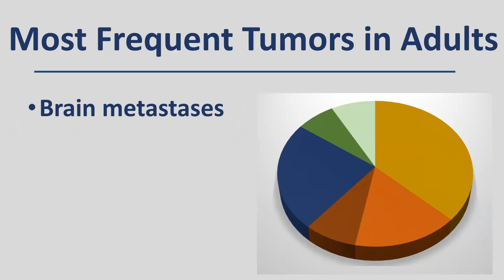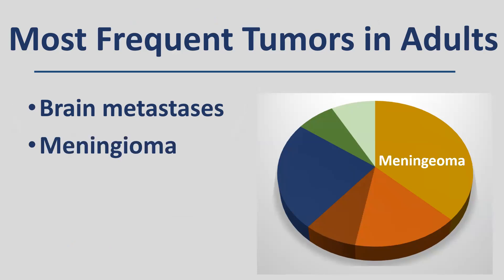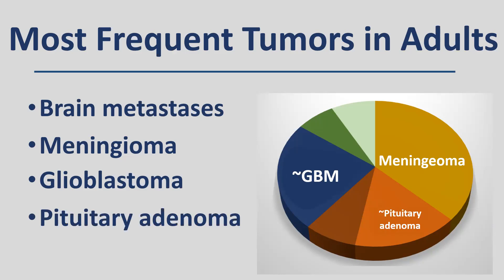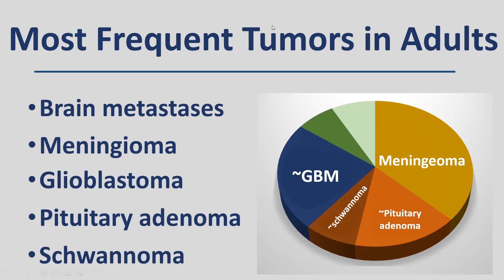In adults, the most frequent tumour is brain metastases. For primary brain tumours, the most frequent are: gliomas — with the majority being glioblastoma — then sellar tumours, mostly pituitary adenomas, and nerve sheath tumours, mostly schwannomas. So the five tumours in adults are: brain metastases, meningioma, glioblastoma, pituitary adenoma, and schwannoma. These constitute the majority of brain tumours in adults — if you know these five, you're already a long way.